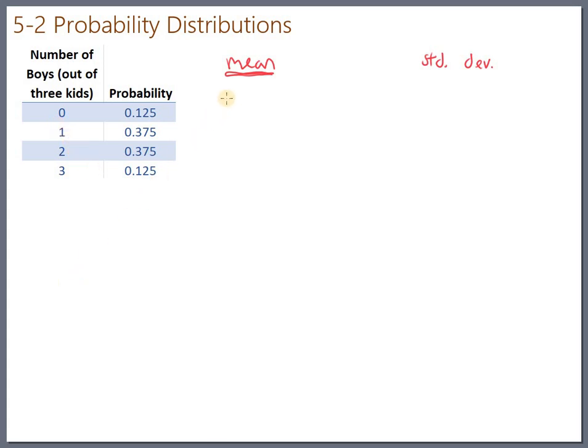And the formula for doing that is saying let's take each outcome like zero and multiply it by the probability of that happening. And then add it all up and that will actually give you the average. So we should take zero times point one two five and one times point three seven five and two times point three seven five and three times point one two five. So I'm multiplying those out. That's zero obviously.